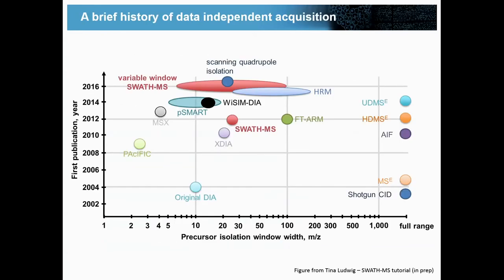Here's a figure depicting the history of DIA — this has been around for some time. The paper from the Yates group I mentioned, and also one from Dave Goodlett which did something similar but without windowed acquisition — he tried to fragment everything. This kind of led to MSE and various implementations. The x-axis depicts the precursor isolation window width, so there are DIA methods using very narrow, medium, or wide windows. The y-axis is the time dimension. Our lab operates somewhere in this space — what we refer to as SWATH.